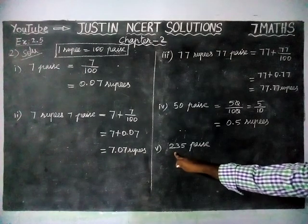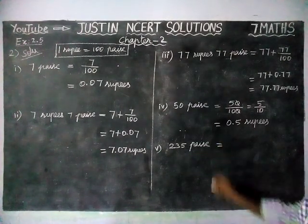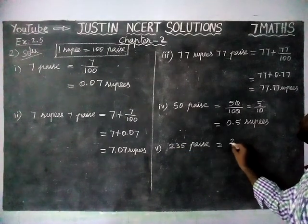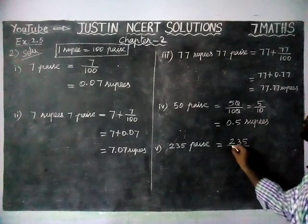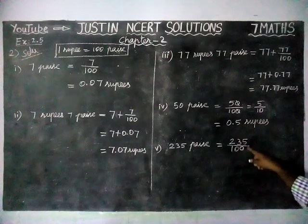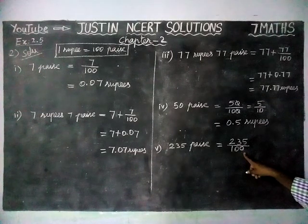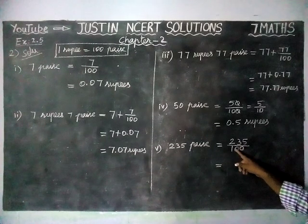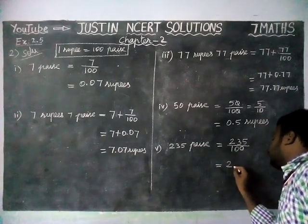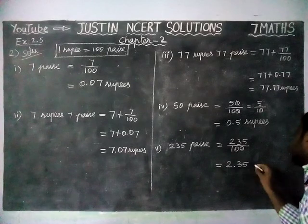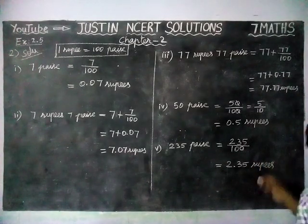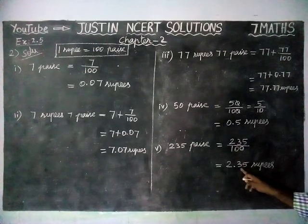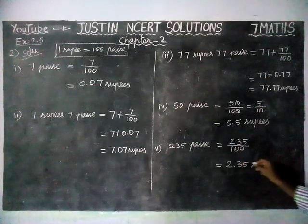And then, 235 paise is equal to — 1 rupee equals 100 paise, so we are going to divide 235 by 100. Because 1 rupee equals 100 paise, we divide it. We have two zeros in the denominator, so we make two decimal places. Therefore, 235 divided by 100 is equal to 2.35 rupees.